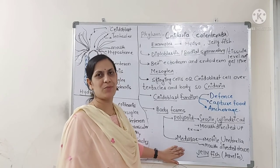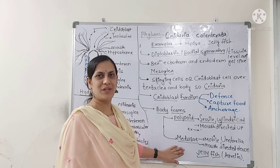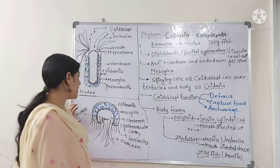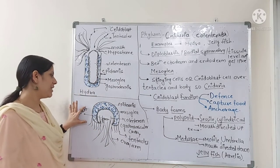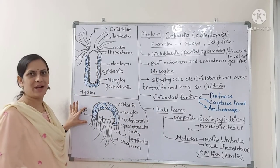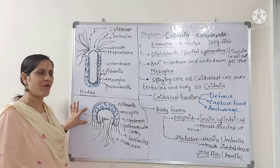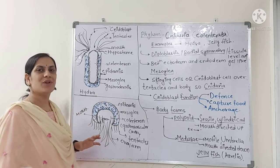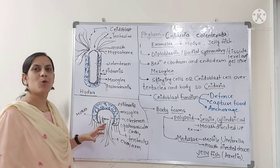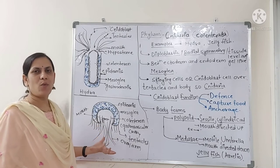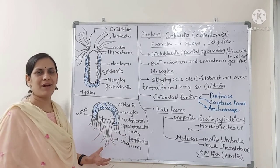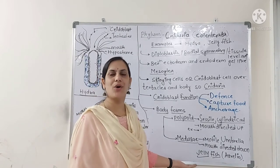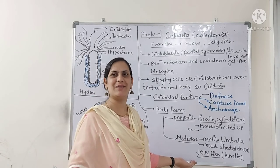The medusoid form is the second body form in cnidarians, in which the shape is like an umbrella. The medusoid form is freely swimming and freely motile. The example available for us is the jellyfish, also called Aurelia.